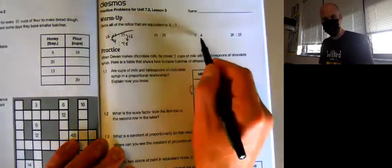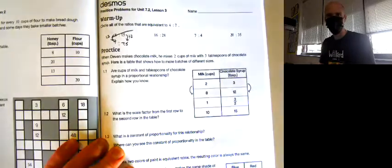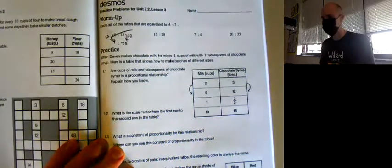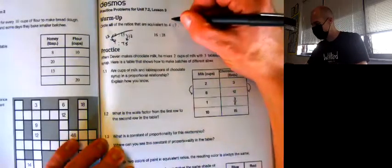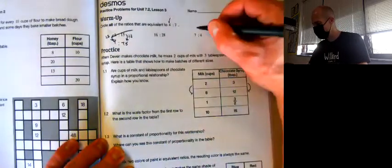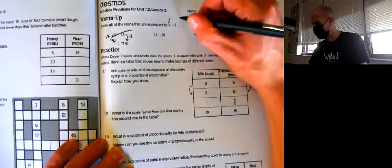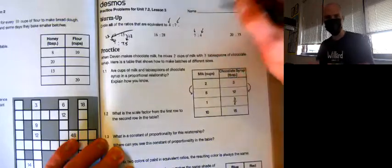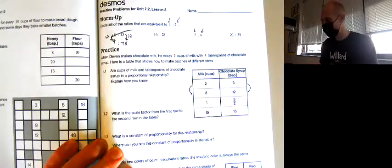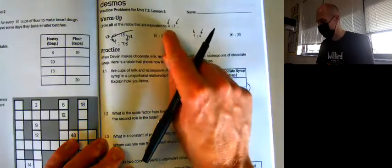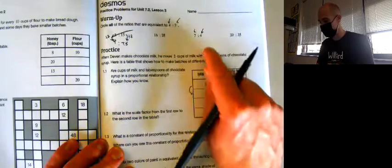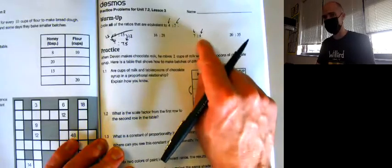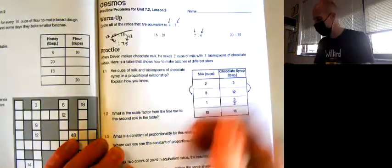I'm going to go straight over to this one and notice that 7 colon 4 and 4 colon 7 are not the same ratio. If you think of them as real life things like sugar and flour, making a recipe with 4 cups of sugar and 7 cups of flour is not the same as 7 cups of sugar and 4 cups of flour. That'd be very different.